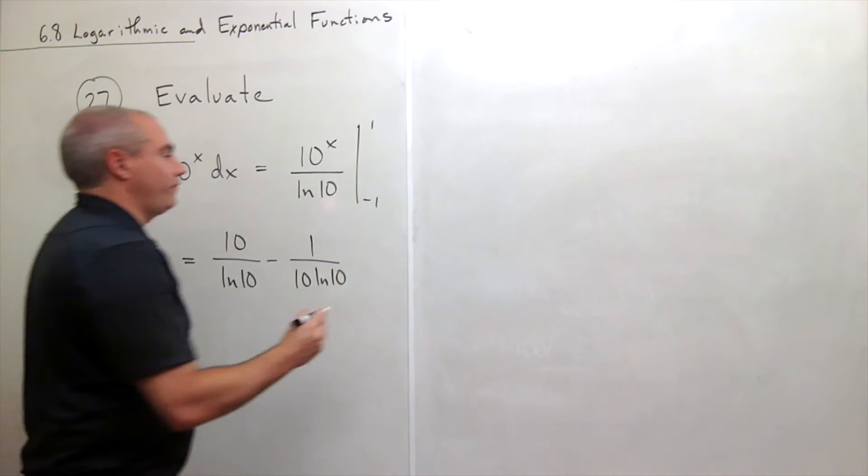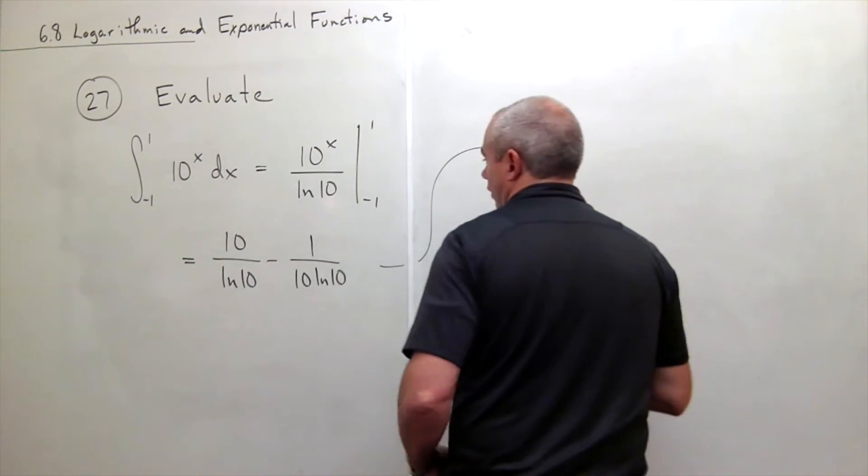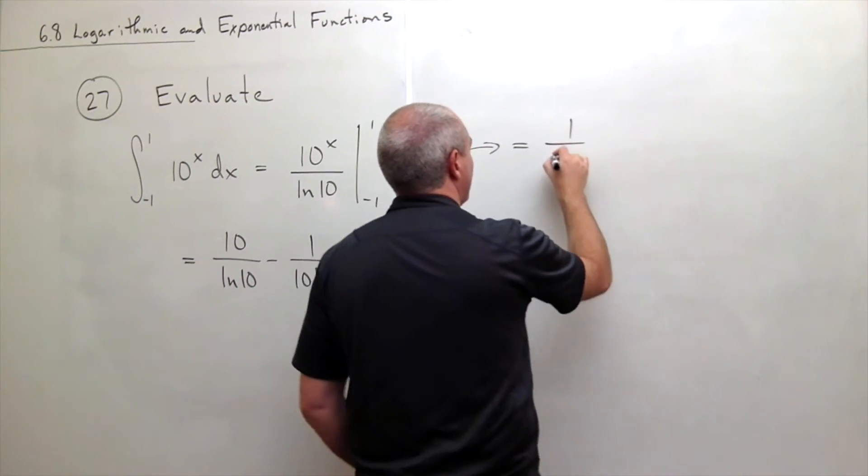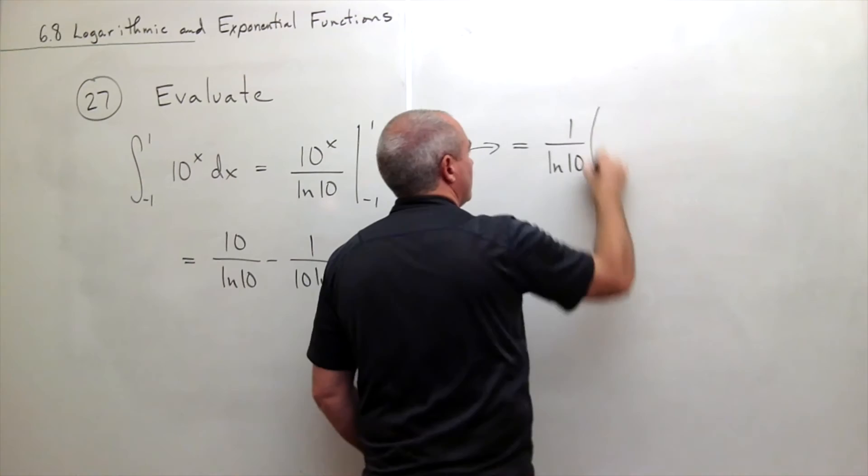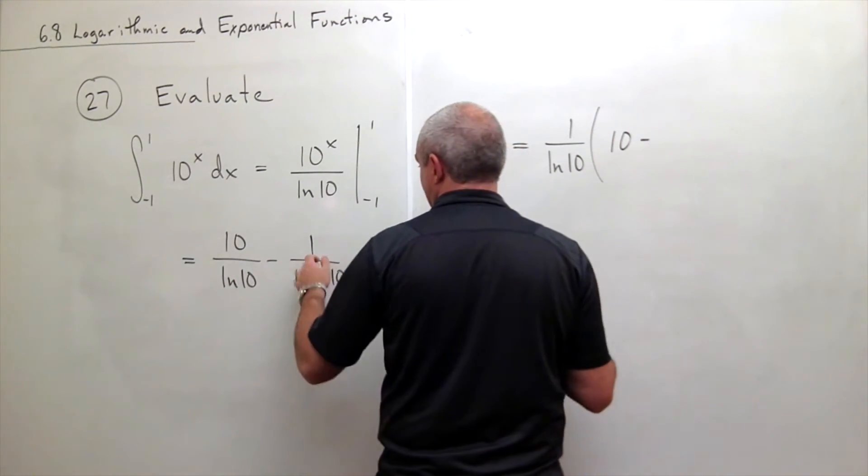If I wanted to simplify that a little bit, I could factor out the ln 10 that's on the bottom and write this as 1 over ln 10 times 10 minus 1 tenth.